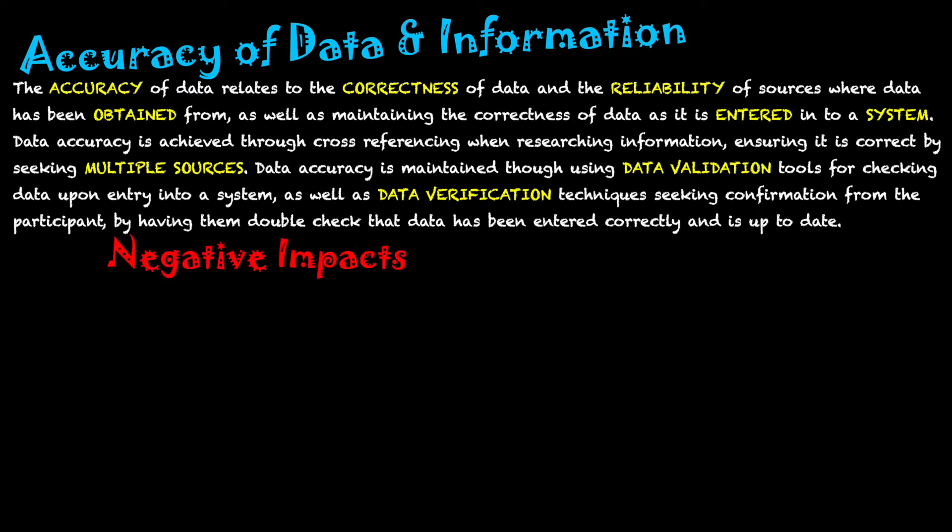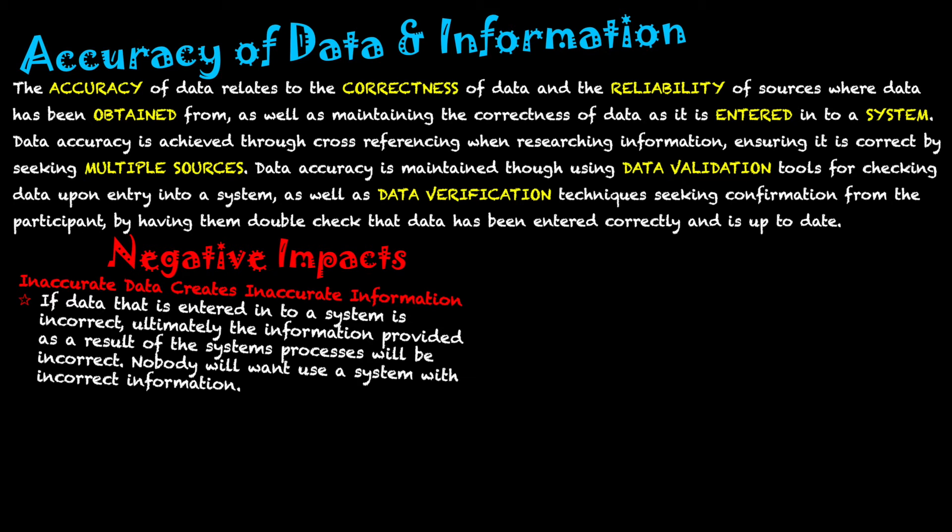Looking at the negative impacts of accuracy of data — the first is that inaccurate data creates inaccurate information. If we're putting incorrect data into our system, after the system processes that data it's definitely going to be wrong, because what we started with was incorrect. So if data into the system is incorrect, the information provided as a result of the system's processes will be incorrect as well. Nobody would want to use a system that gives incorrect information.